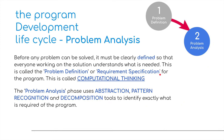Let's take this first step — we're going to be looking at the problem analysis. Before any problem can be solved it must be clearly defined so that everyone working on the solution understands what is needed. This is called problem definition or requirement specification for the program. In terms of the problem analysis phase, we're going to be using abstraction, pattern recognition and decomposition tools to identify exactly what is required of the program.